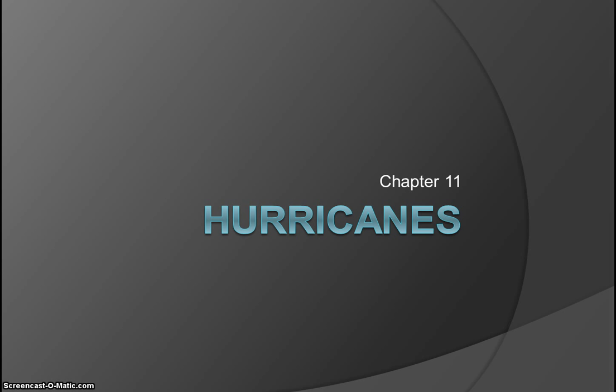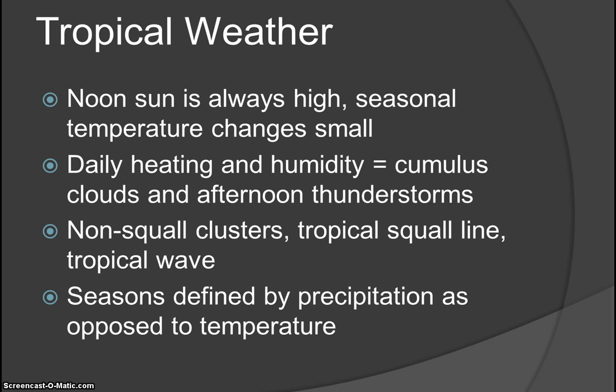Sandy actually became an extra-tropical cyclone of extraordinary measures when it moved in across the New Jersey Shore. Tropical weather is always in the tropics — basically 25 to 30 degrees north and south of the equator. Noon sun is always high, seasonal temperature changes are very small, mainly associated with wet and dry seasons. Daily heating and humidity produce cumulus clouds and afternoon thunderstorms are very common.